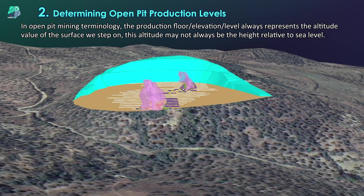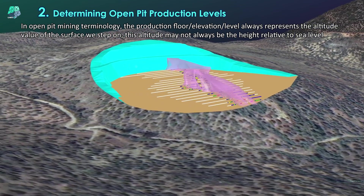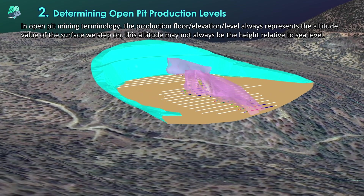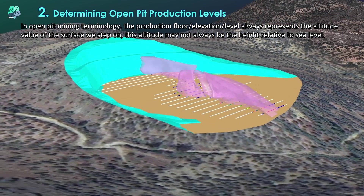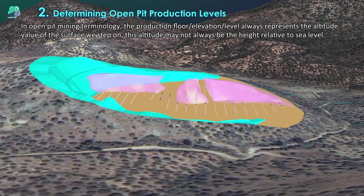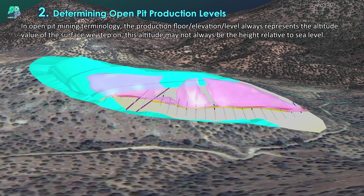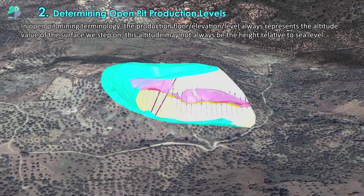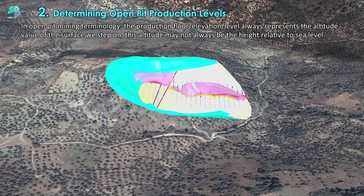In open pit mining terminology, the production floor elevation level always represents the altitude value of the surface we step on. This altitude may not always be the height relative to sea level.